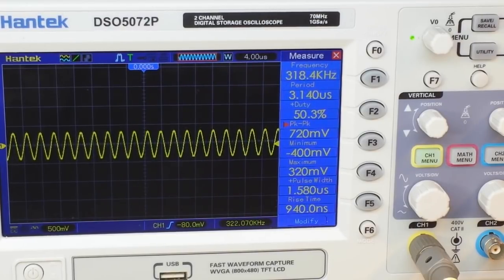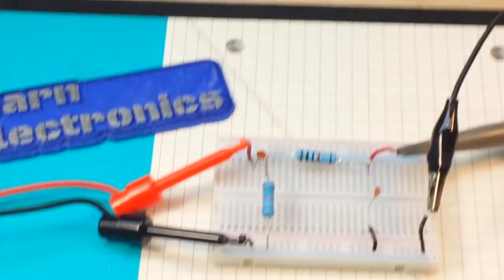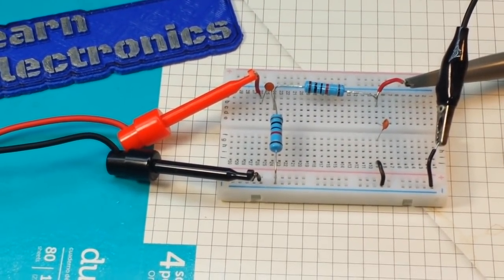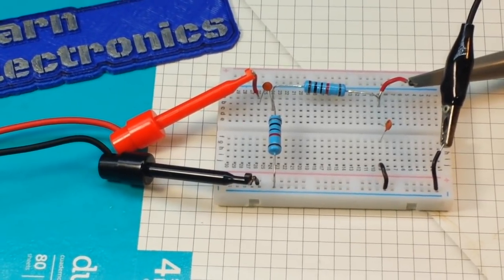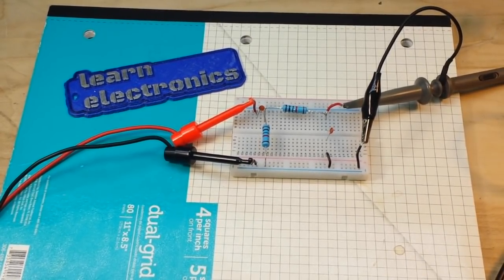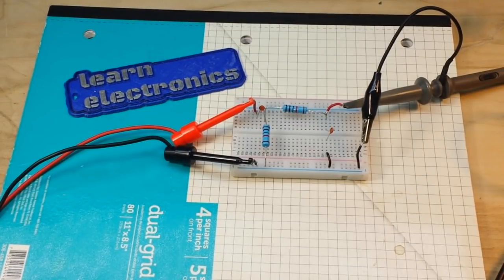So there you have it. The bandpass filter. A combination of the low pass and the high pass. A little bit of math, and you can select whichever band you want to let through, and which bands you don't want to let through.